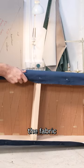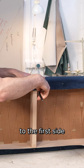Now we're happy with the placement of the fabric and it's temporarily tacked in place. We can go back to the first side we started on. I'm just going to remove the first temporary staple in the middle.